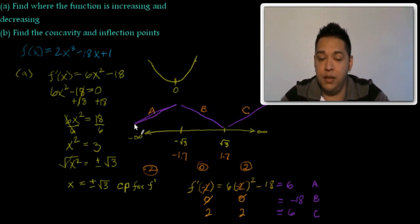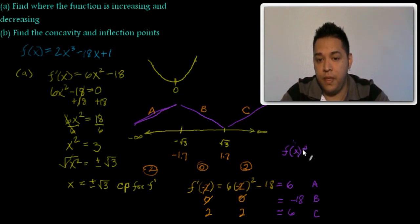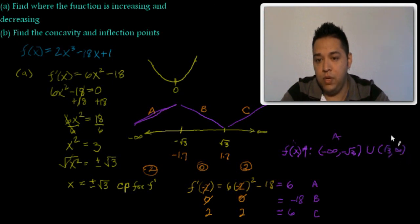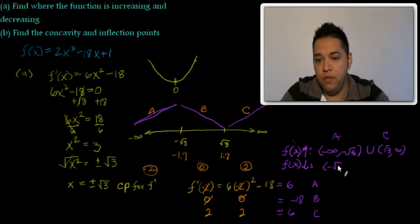So we're done with part a. f(x) is increasing on (−∞, −√3) ∪ (√3, ∞) — those are regions A and C. f(x) is decreasing from −√3 to √3 — that's region B. Now we can move on to part b.